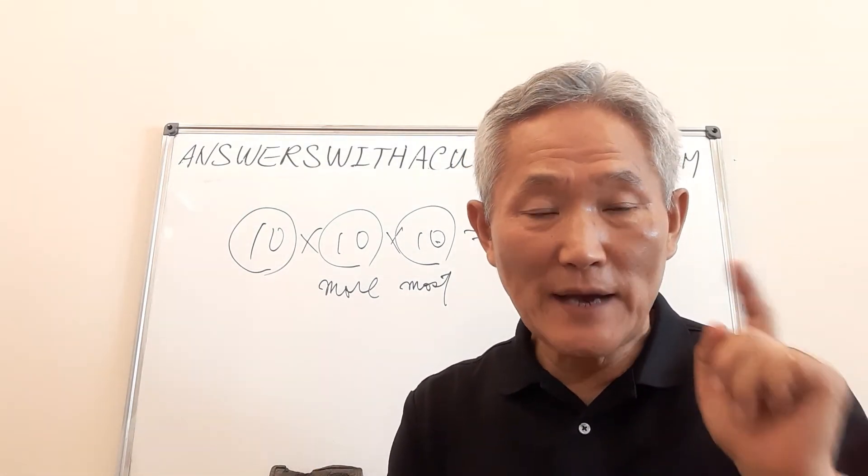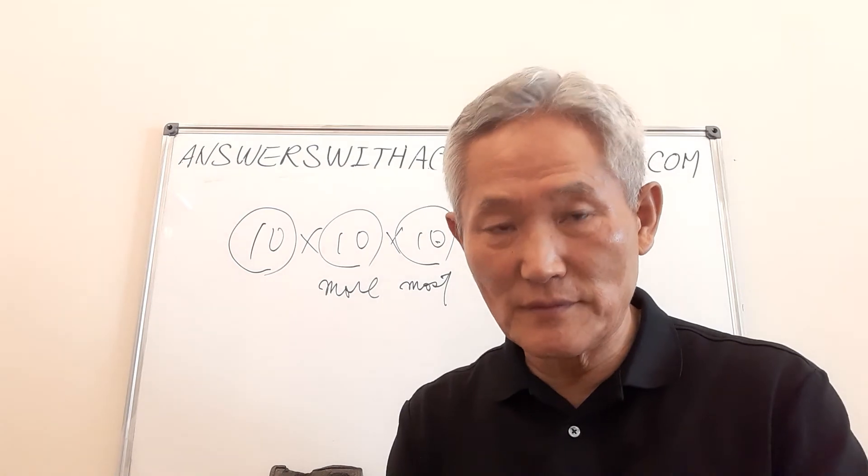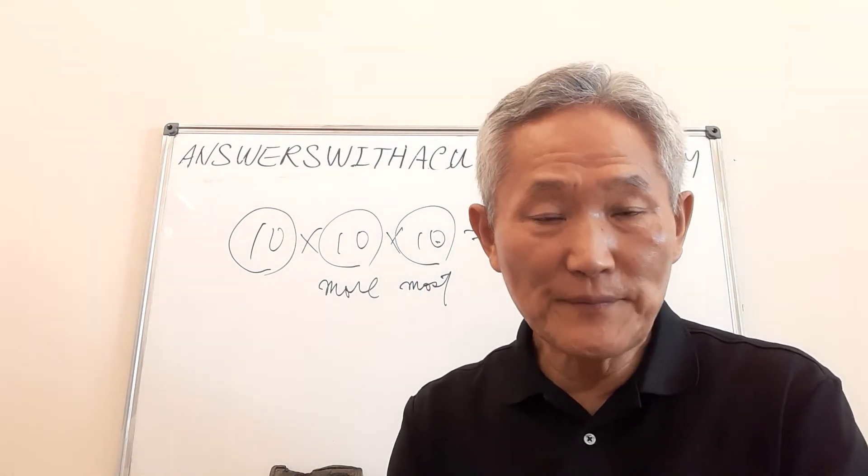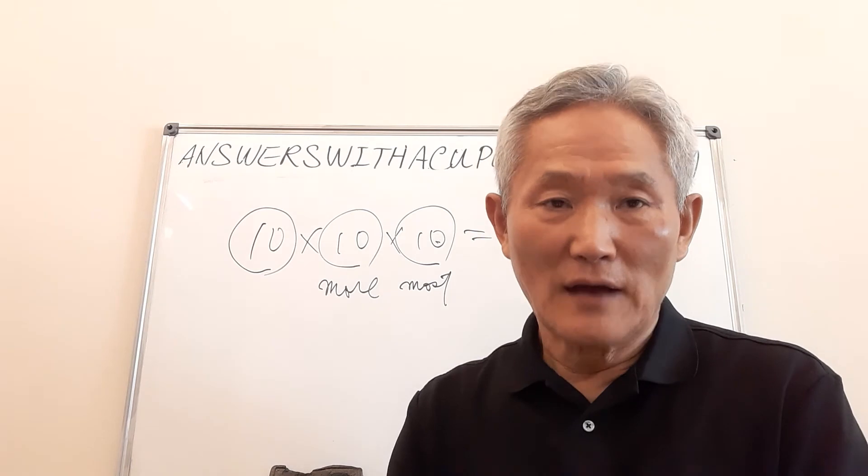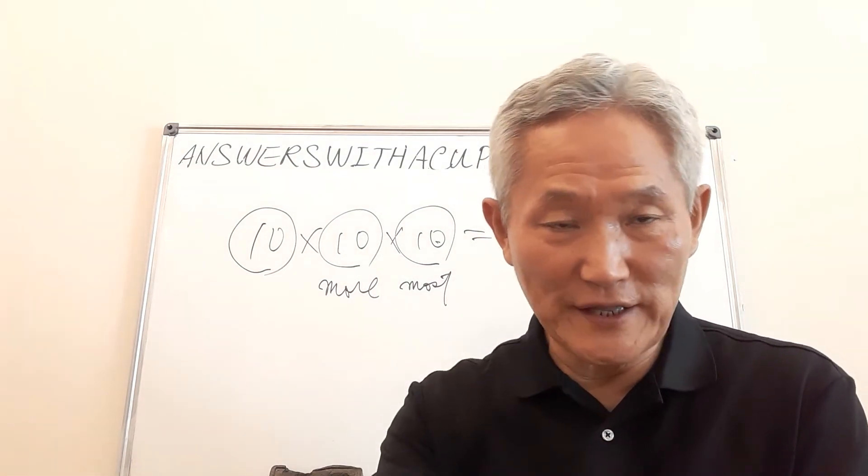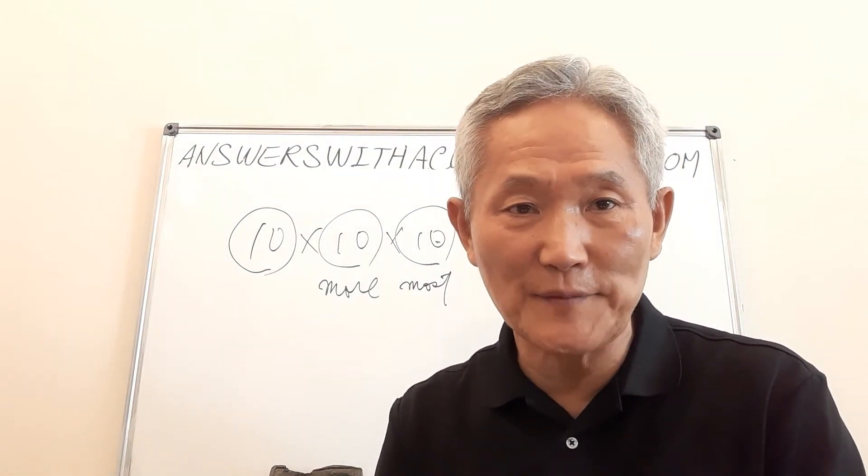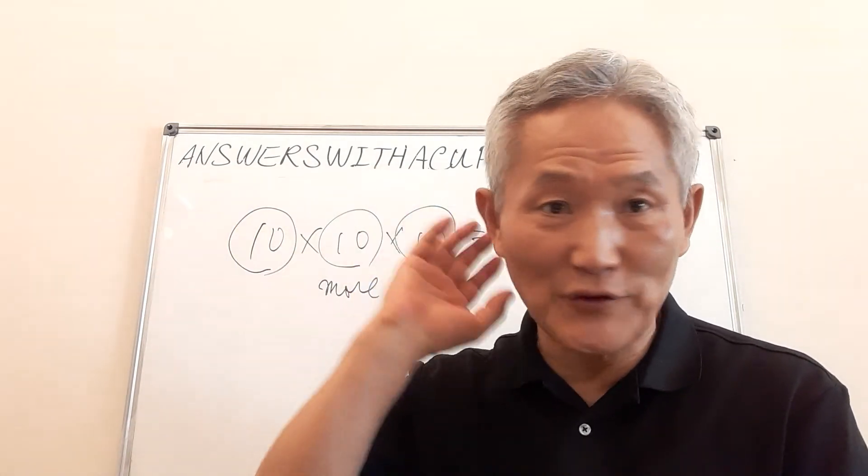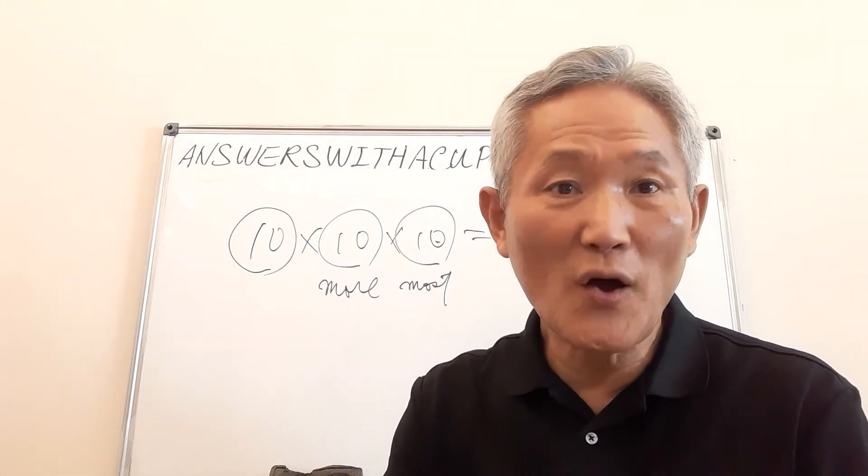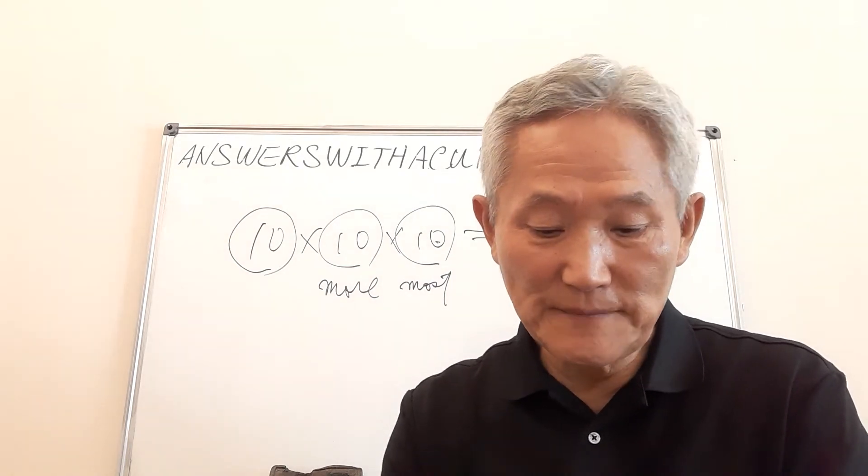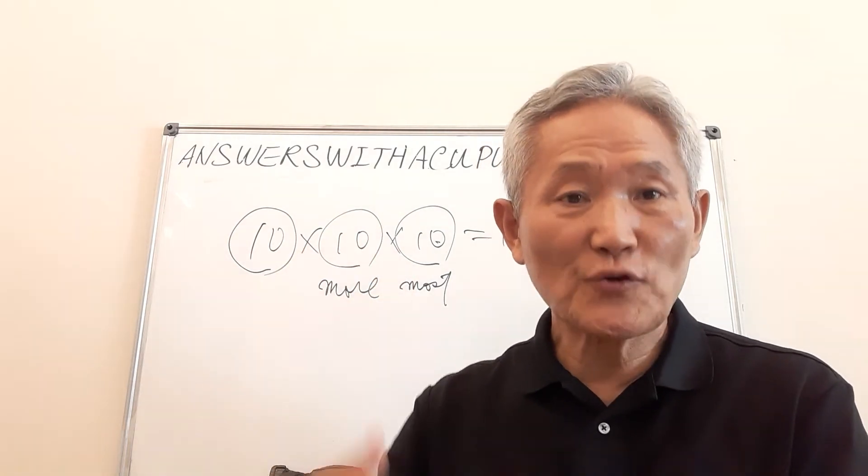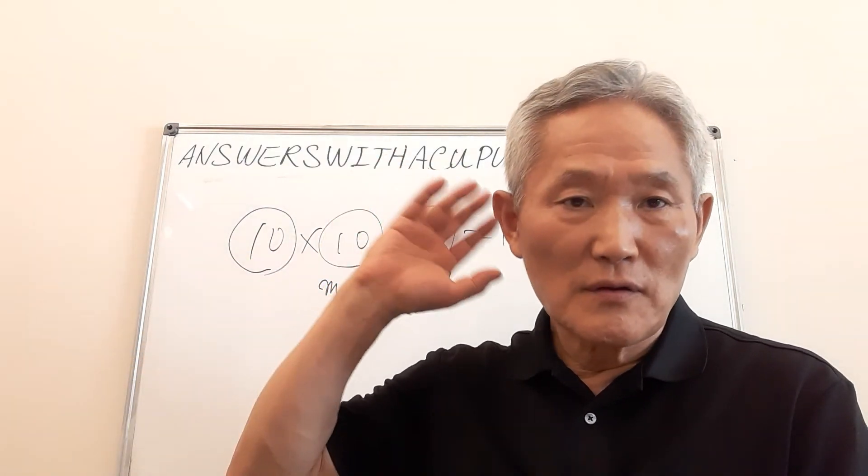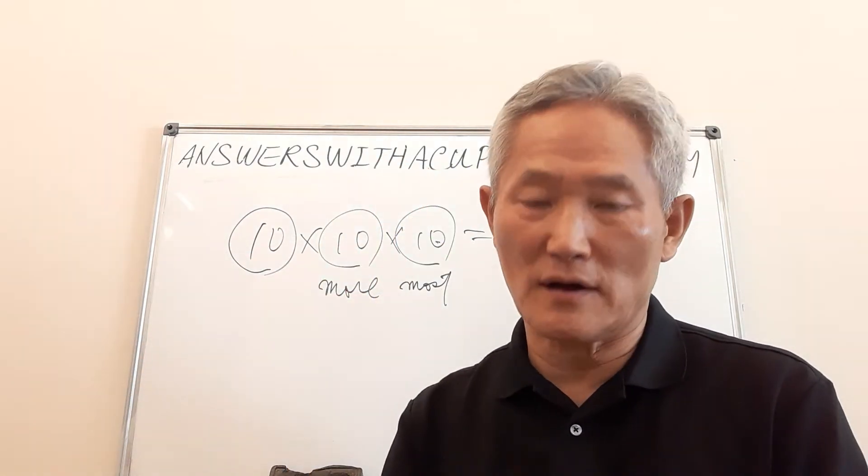So, based upon all this, 70 times seven, you have to forgive. Does not mean I can forgive the 470 times, and after 471, I become angry. I don't have to forgive. No. What that means is, we have to forgive all the time.